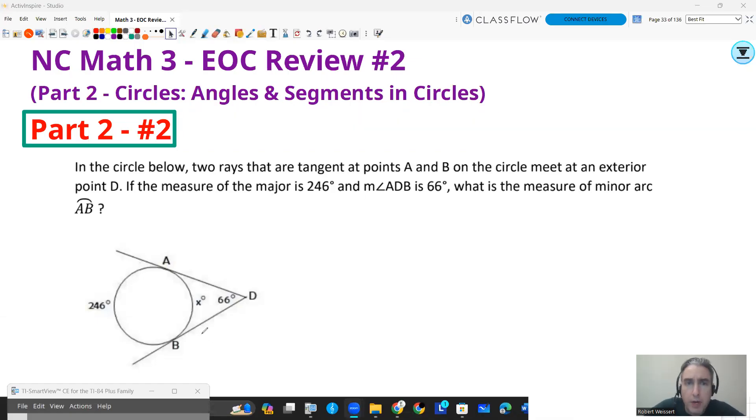Part 2, number 2. In the circle below, two rays that are tangents. Tangent means that it touches the circle. It doesn't go through it or on the other side of it. They're tangent at point A and B. On the circle, they meet at an exterior point D. If the measure of the major, and we meant major arc here, is 246 degrees, and the measure of angle ADB is 66 degrees, what is the measure of minor arc AB? So first thing is we are going to know this relationship. This arc, 246, minus this arc, which we'll call X, the difference of that divided by 2 will always equal the exterior angle.